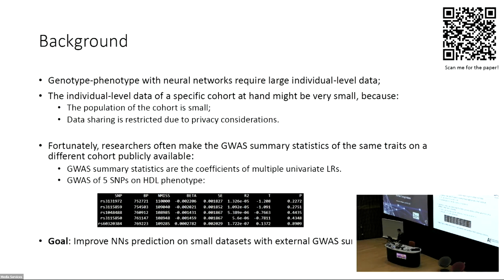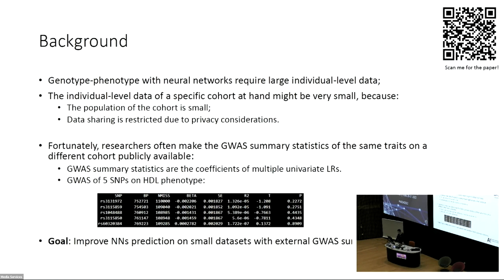Fortunately, researchers in this field often make GWAS summary statistics of the same trait — but from a different cohort — publicly available. The GWAS summary statistics are the coefficients of multiple univariate linear regressions, where for each model we use one SNP to predict the phenotype, and report the coefficients, standard errors, test statistics, and P-values. For example, here is the GWAS result of five SNPs on the HDL phenotype.